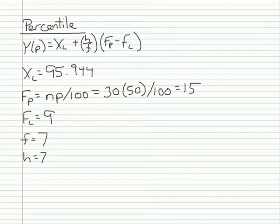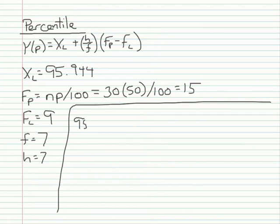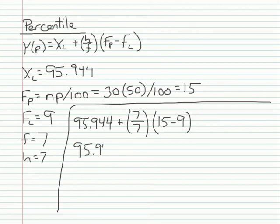Now you have all the information you need to make this computation. I'm just going to plug in the values. X sub l is going to be 95.944 plus the interval width divided by the frequency, and that's going to be multiplied by f sub p minus f sub l, which is going to be 15 minus 9. With that you get 95.944 plus 6, and the answer is 101.944.